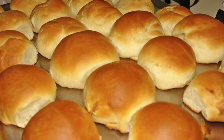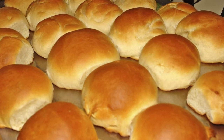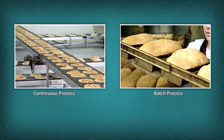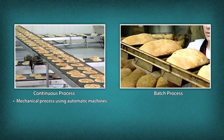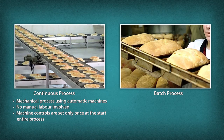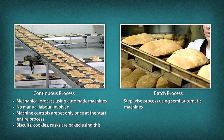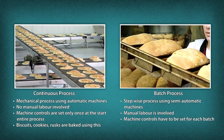Execution of baking process. In the baking industry, there are two ways to process baked products: continuous process and batch process. Continuous process is a mechanical, non-stop process using automatic machines with no manual labor involved; machine controls are set only once at the start. Biscuits, cookies, etc. are baked using this process. Batch process is a step-wise process using semi-automatic machines; manual labor is involved and machine controls have to be set for each batch. This process is suitable for baking bread, cakes and buns.